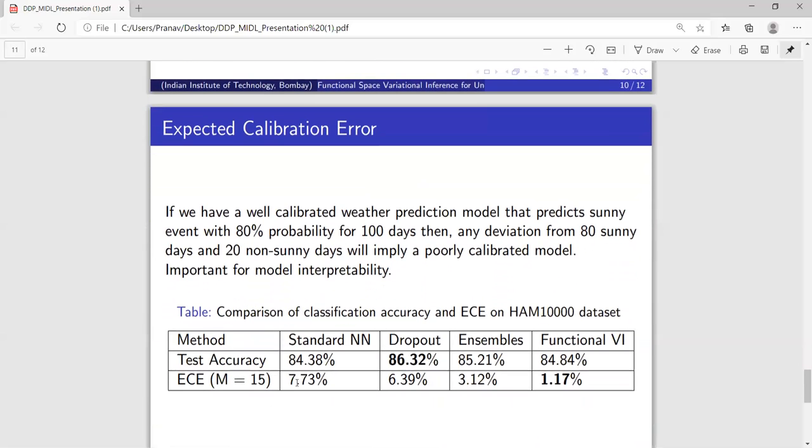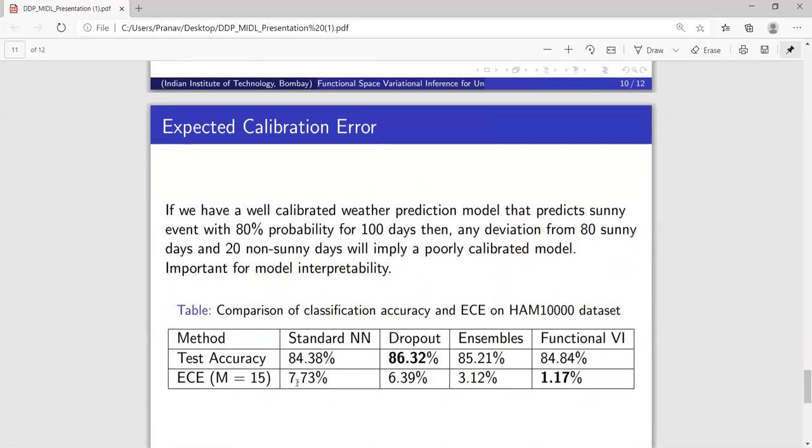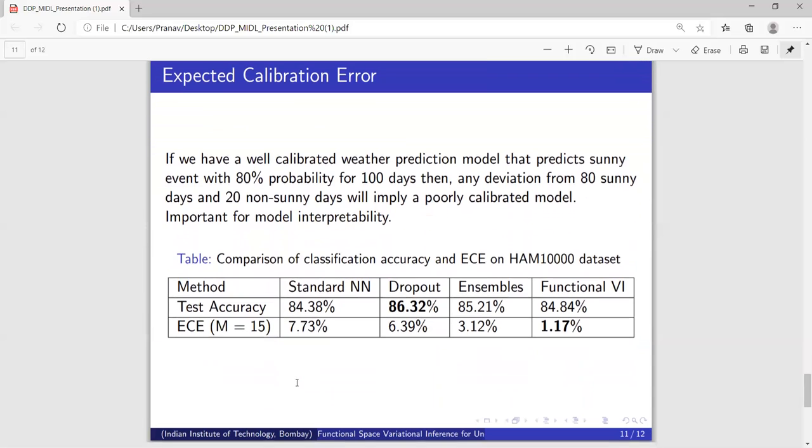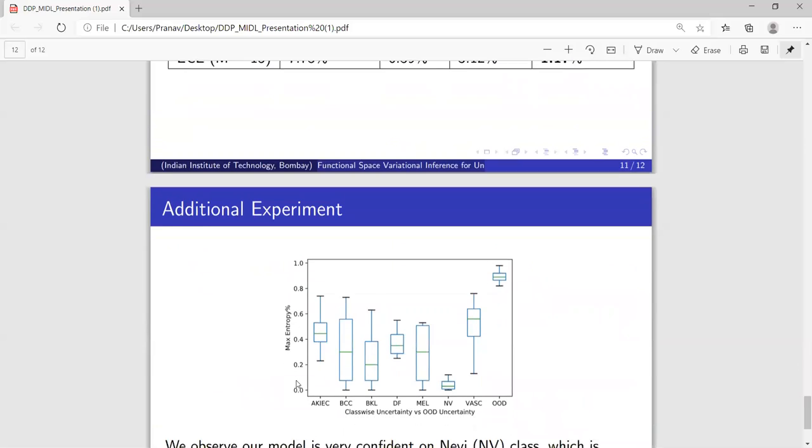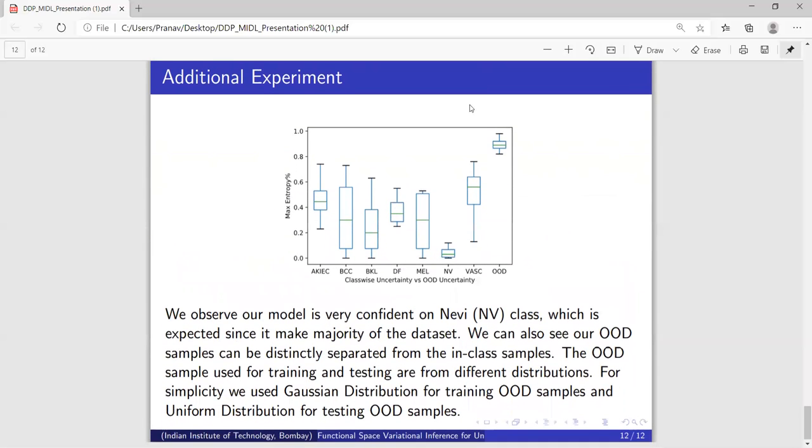Performance is almost the same. And the final conclusion is functional space VI has slight underfitting compared to other Bayesian methods, but a significant boost in terms of calibration and therefore are ideal for detecting out-of-distribution samples as can be seen from this example.